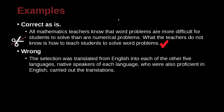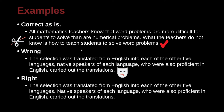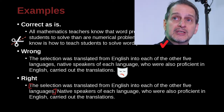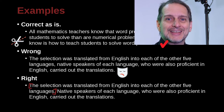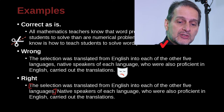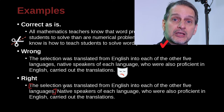Let's look at an example where we can clearly see what's wrong. 'The selection was translated from English into each of the other five languages, native speakers of each language, who were also proficient in English, carried out the translations.' Here we see a number of commas jammed in, which makes the reading and understanding a little bit difficult. The correct version: 'The selection was translated from English into each of the five languages.' Period. This is a good example of keeping your sentences short — you don't need to stick every idea into one sentence. You're much better off separating ideas into separate sentences.